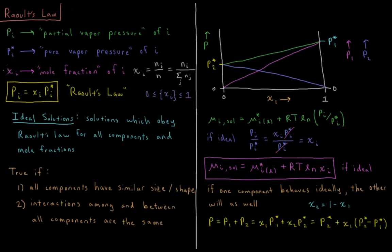We're going to define the quantity chi_I — that's the Greek letter chi — so chi sub I is what we call the mole fraction of I. Chi_I equals the number of moles of I divided by the total number of moles, or the number of moles of I divided by the sum of the moles of every component in the mixture.